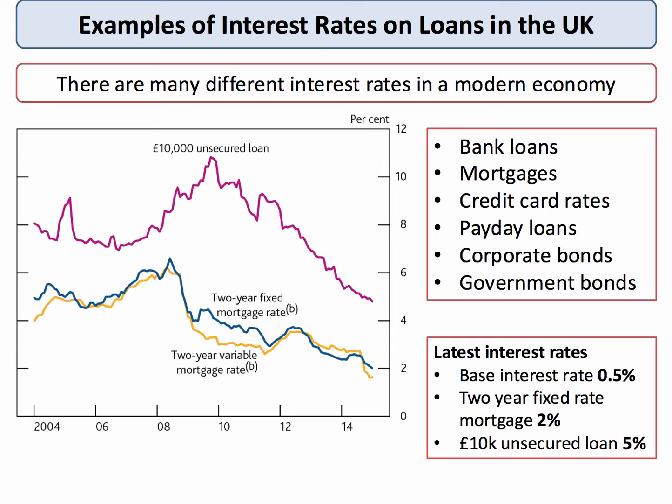Interest rates can range from overdrafts and bank loan rates to mortgages in the housing market, the interest rate you pay on your credit card, the interest rate that companies pay when they issue corporate bonds, and the treasury yield — the interest rate on five, ten, or twenty year government debt.